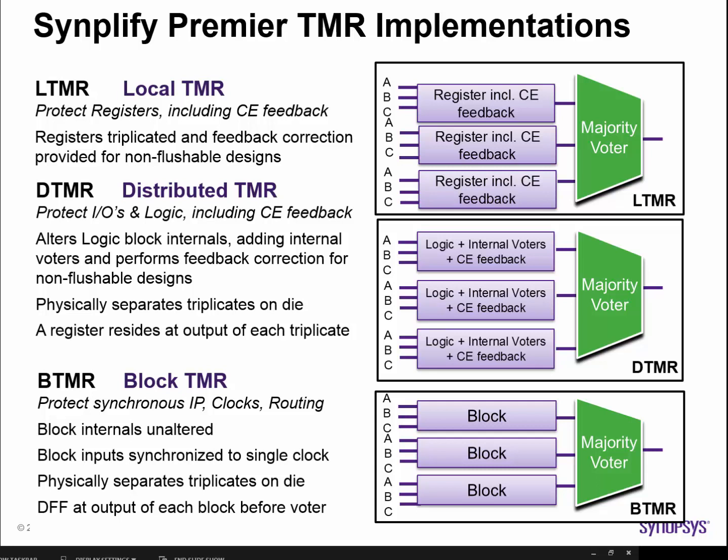Finally, there is something called block TMR or BTMR. This is used to protect clocks and routing as well as synchronous IP blocks that you cannot internally alter, so you must resort to protecting them externally. You can boost protection in any part of the design protected by DTMR and BTMR by physically separating the triplicate blocks on the die.